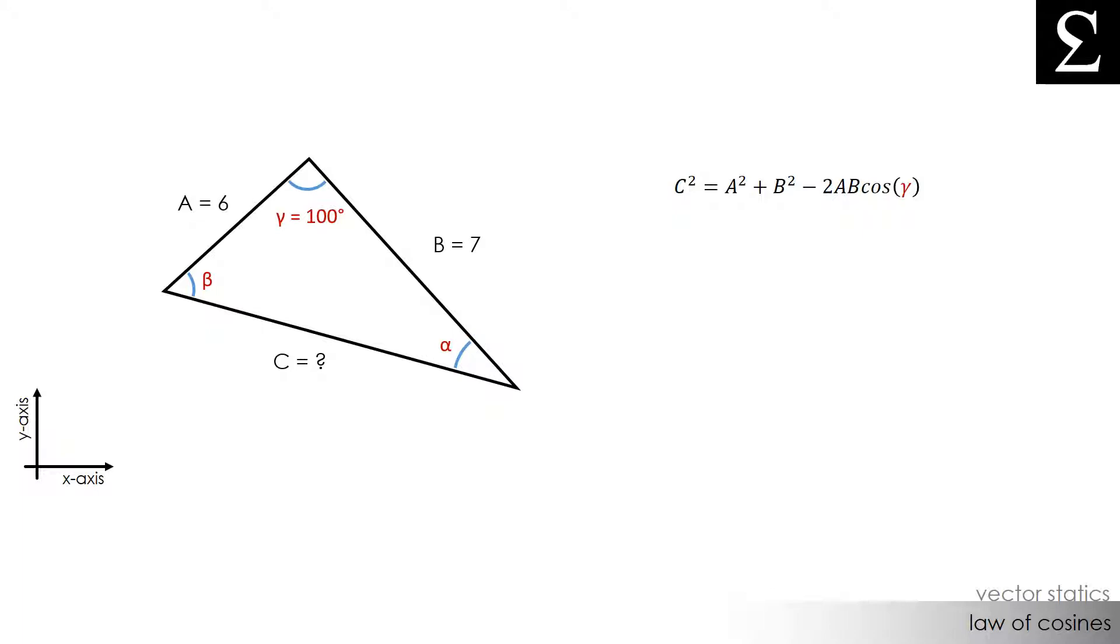Well, we know that side c is the unknown and the angle opposite to side c is the angle gamma. We also know that the angle gamma is formed by the sides of a and b. So when we come back to our equation,